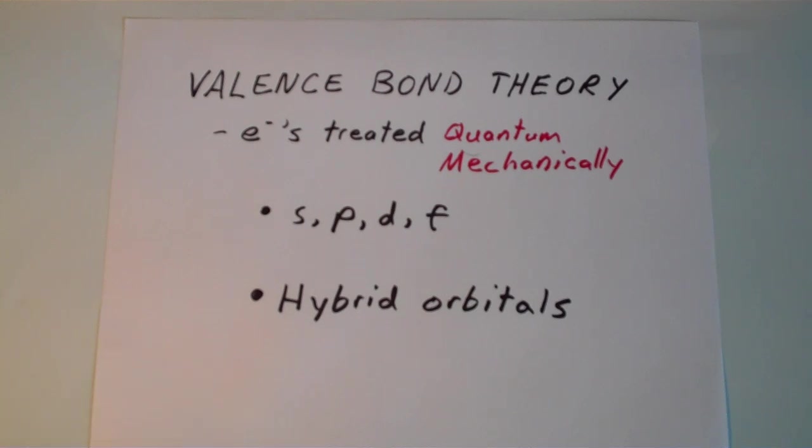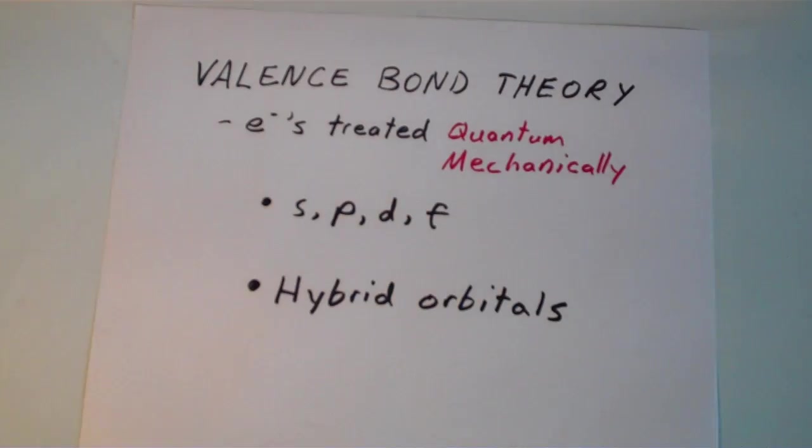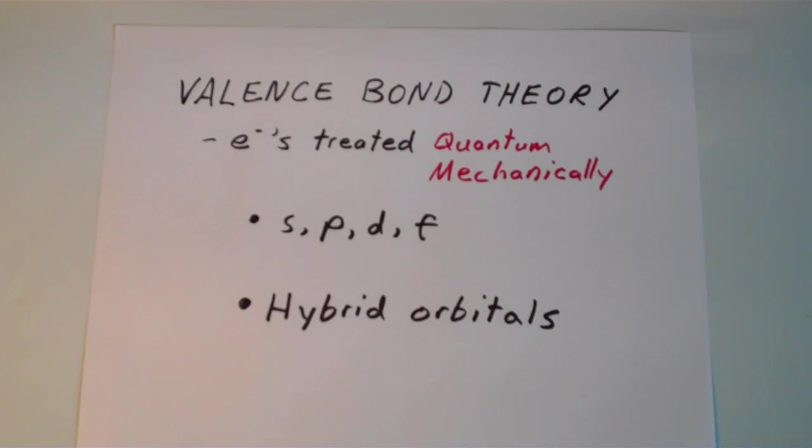Okay, so now I'm going to attempt to give a gentle introduction to valence bond theory. So under valence bond theory, electrons are treated in a quantum mechanical fashion, in contrast to something like Lewis theory, in which electrons are treated as just dots.